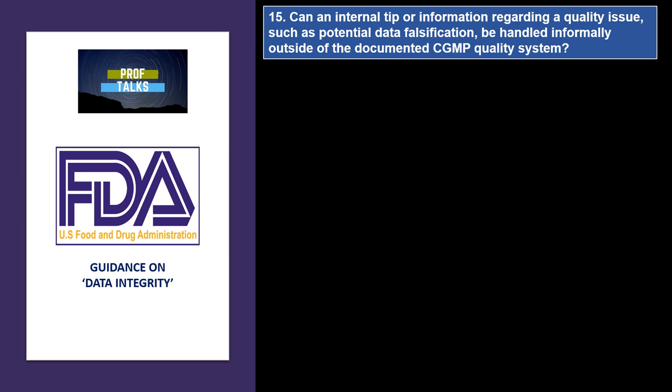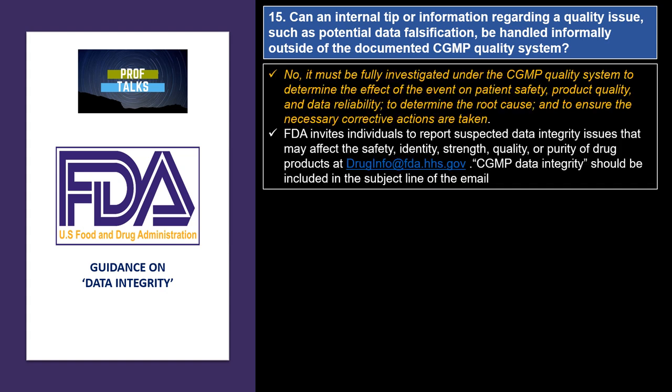Can an internal tip or information regarding a quality issue, like falsification, be handled informally outside of the documented CGMP quality system? Never. It must be fully investigated under the CGMP quality system to determine the impact on product quality, patient safety, and data reliability. It should be investigated to determine the root cause and to ensure that appropriate corrective and preventive actions have been taken.